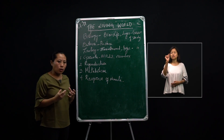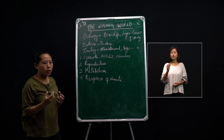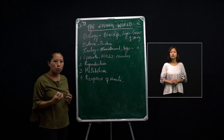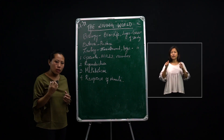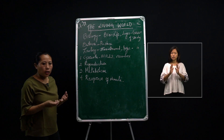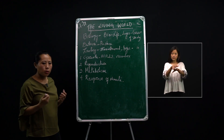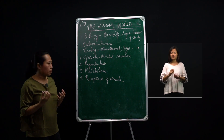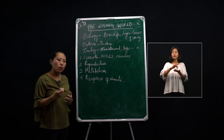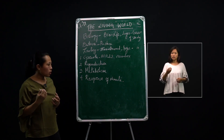So increase in protoplasmic content and increase in the number of cells are characteristic features of growth. In plants, growth continues throughout their lifespan, and the growth regions are confined to the root tip, shoot tip, and within the cambium. In animals, including human beings, there is only a certain period of growth, while growth in older forms refers to the replacement of older cells by new cells.